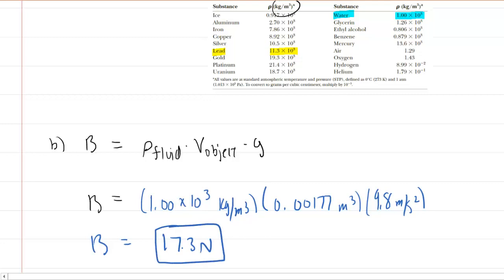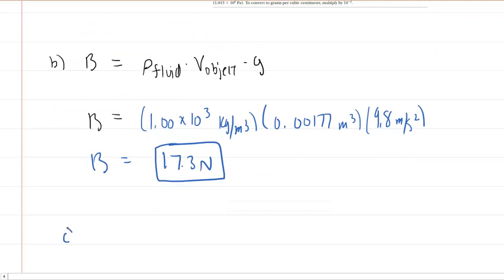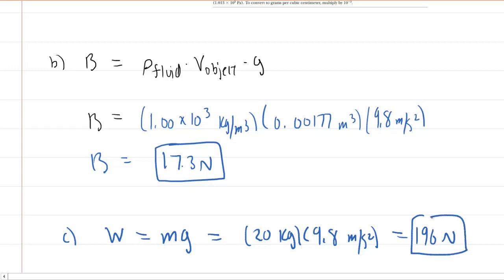In part C, we were asked to determine the lead's weight. And we've learned from previous chapters that the weight of an object is simply its mass times g. So all we need to do is take the mass that was given in the question, multiply that by g, and this will give us a weight of 196 newtons. So that's the correct answer to part C.